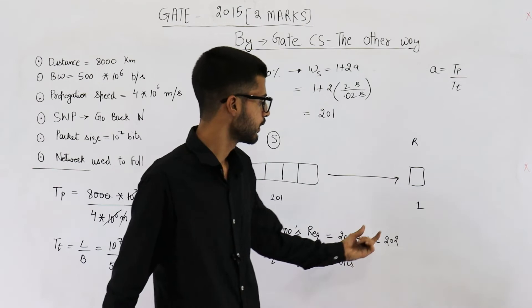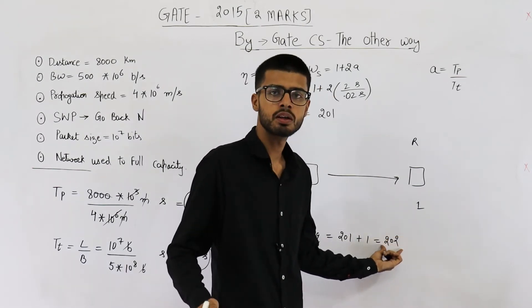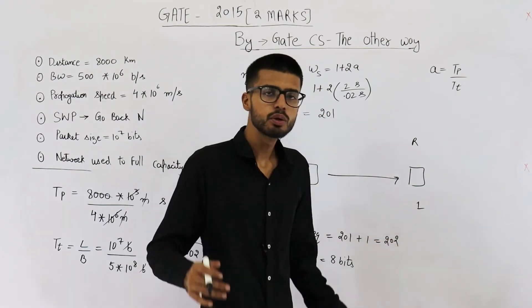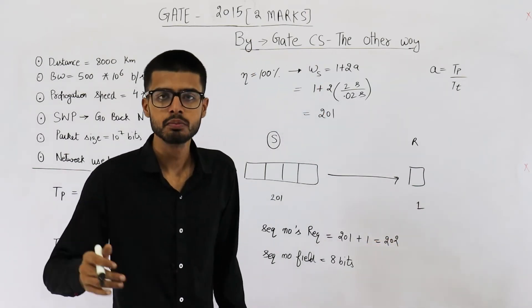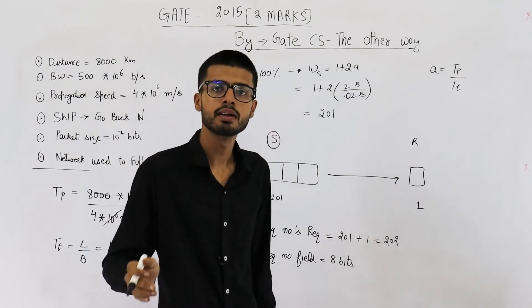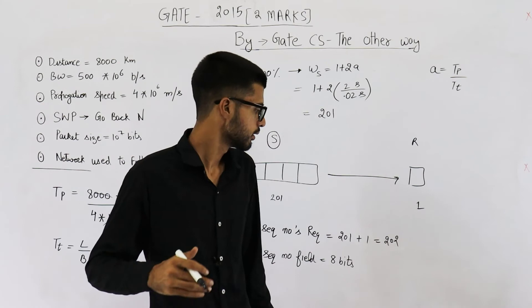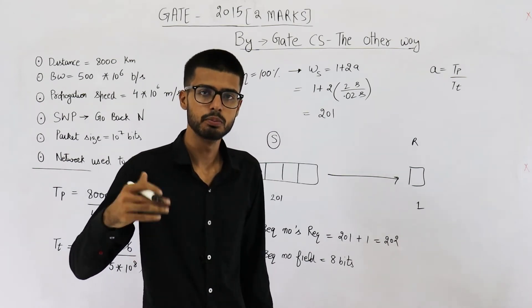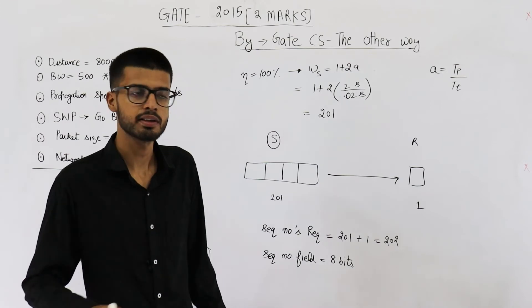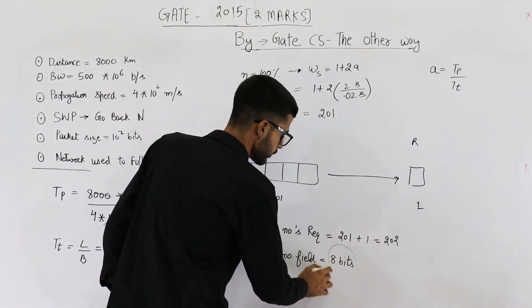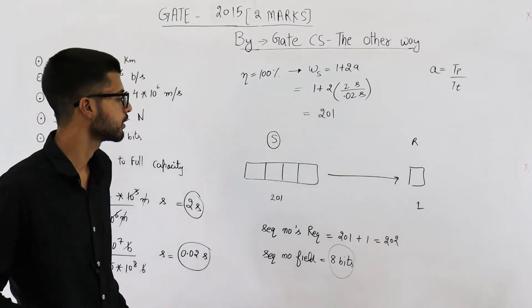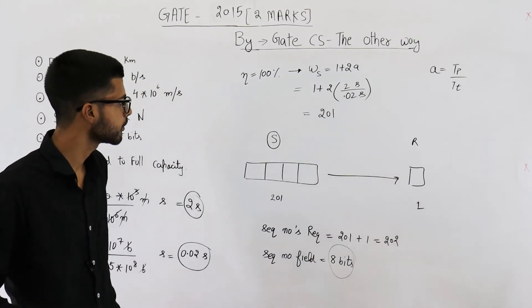You can just take log to the base 2 of this value and its ceiling. Why are we taking ceiling? Because with 7 bits, you can represent counting maximum till 127. But we actually want to go till 202, so 7 bits are not enough. The value must be more than 7. Next possible integer is 8, so we require 8 bits. Its log will be 7 point something, so ceiling will make it 8. Answer to this question is 8.